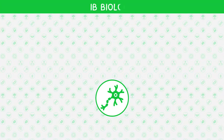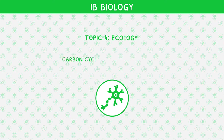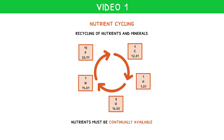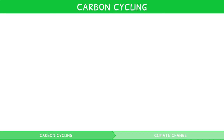Welcome back to our IB Biology video series. This is the second and final video in IB Biology Topic 4, Ecology, where we will be looking at carbon cycling and climate change. In our first IB Biology Topic 4 video, we introduced the idea of nutrient cycling and how it improves nutrient availability to make an ecosystem sustainable. From this, the IB expects you to know how carbon is recycled through the carbon cycle. Let's look at this now.